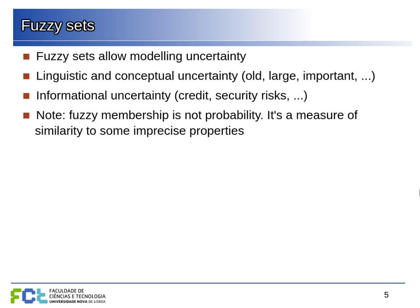We can capture things like linguistic uncertainty and vagueness, or even epistemic uncertainty where we don't know for sure which class something belongs to. Note that fuzzy membership is not really a probability — even though it's a measure between zero and one, it's not meant to be interpreted as a probability. Rather, it's just a measure of vagueness or uncertainty.